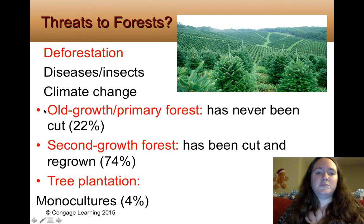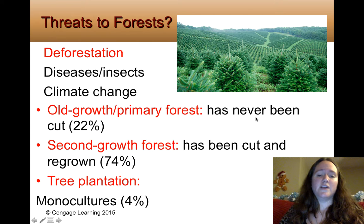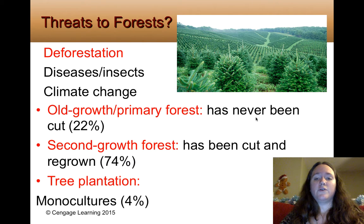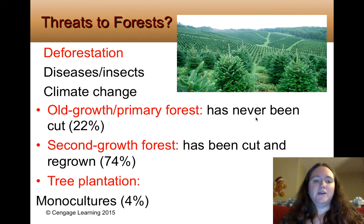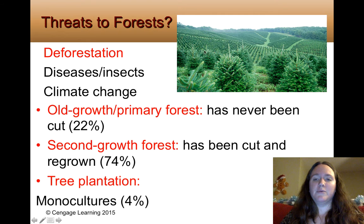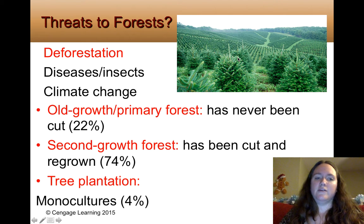You need to know these percentages. An old growth or primary forest is one that has never been touched or cut down, and this is 22% of all forests on Earth. Secondary growth forest is something that's been cut and regrown, and that's 74%. And then you have tree plantations, which are often monocultures like a Christmas tree farm, making up 4% of our forested areas.